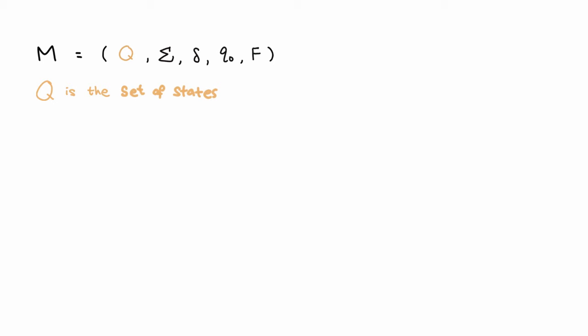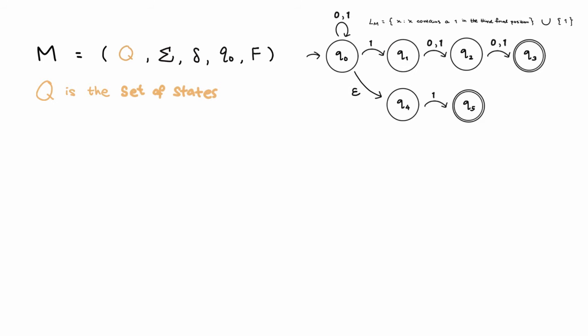Q is the finite set of the machine states, so for our previous NFA, that would be the set containing Q0, Q1, Q2, Q3, Q4, and Q5.